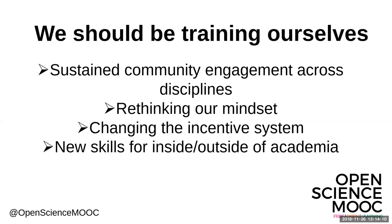There is a significant deficit in training for these new expectations and skills around the world. What we need is for the global research community to train itself through sustained engagement — not just locally, but across disciplines and across silos. This involves rethinking our mindset, embracing collaboration, continuous publication, and transparency as core aspects of research. The implications include changing the faulty incentive system and gaining new knowledge and skills that can be transferred outside of academia too.